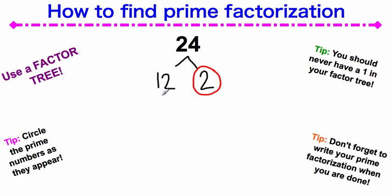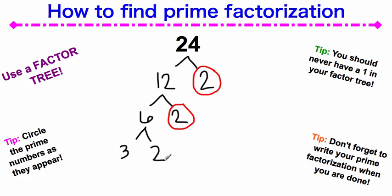Next, I'm going to continue on with my factor tree. I know that 6 times 2 is 12, and again, I know 2 is a prime number, so I'm going to circle that. Now, 6 is not prime because 3 times 2 equals 6, so I have to keep going with my tree. So I will write 3 times 2 equals 6.